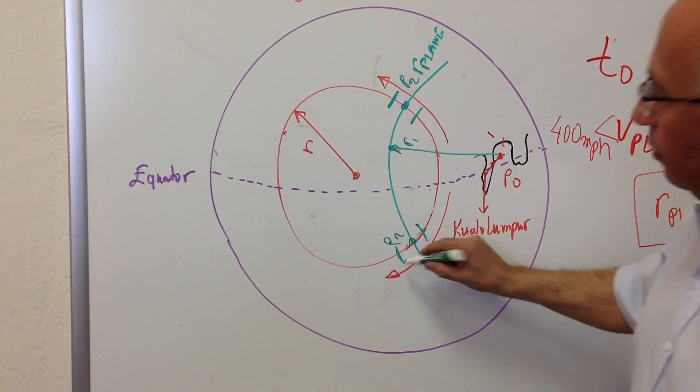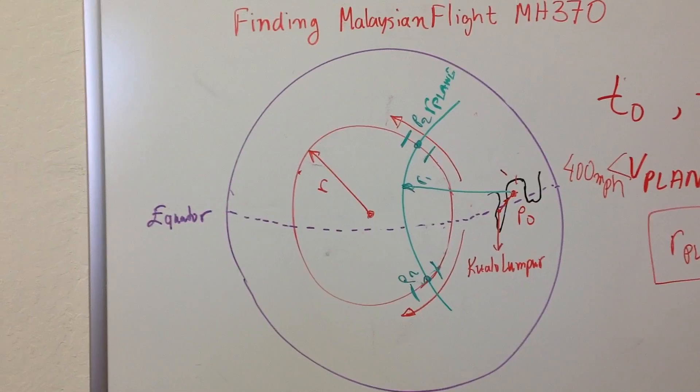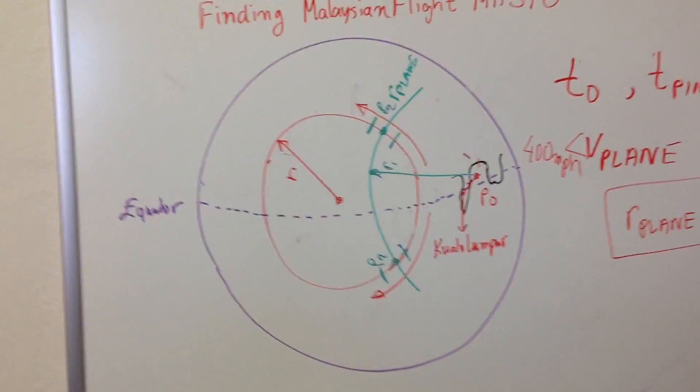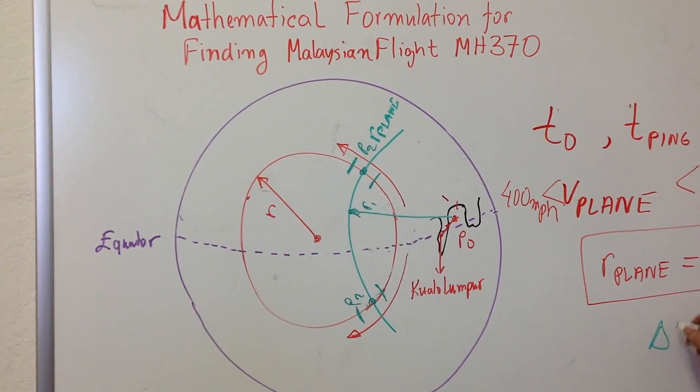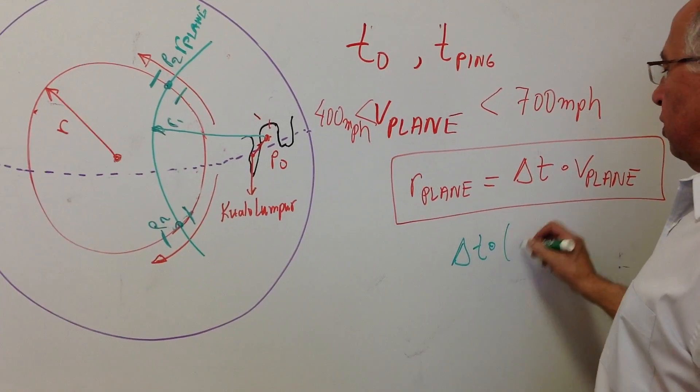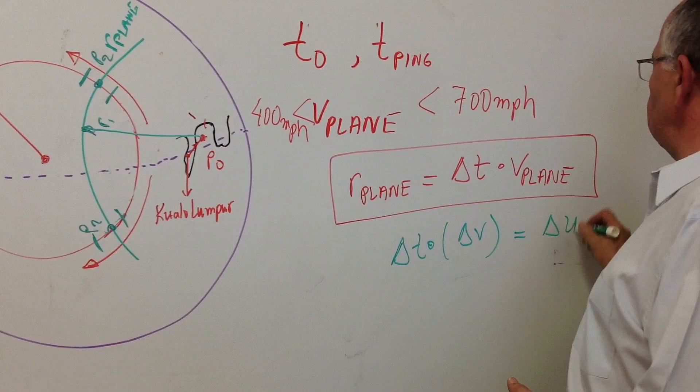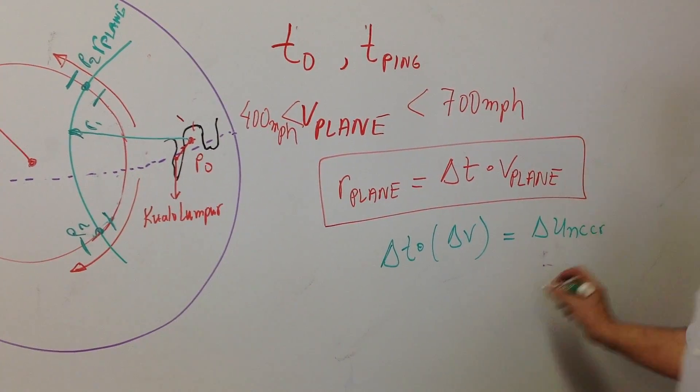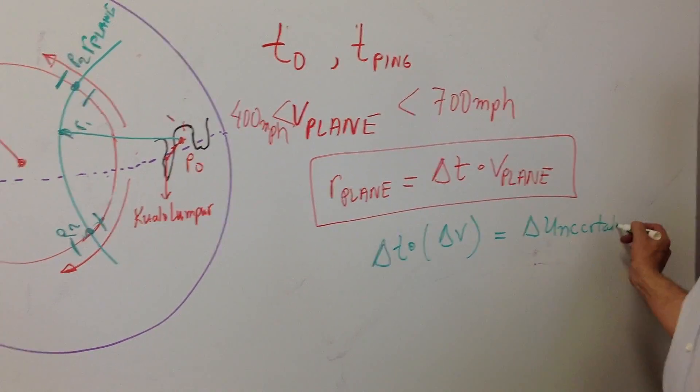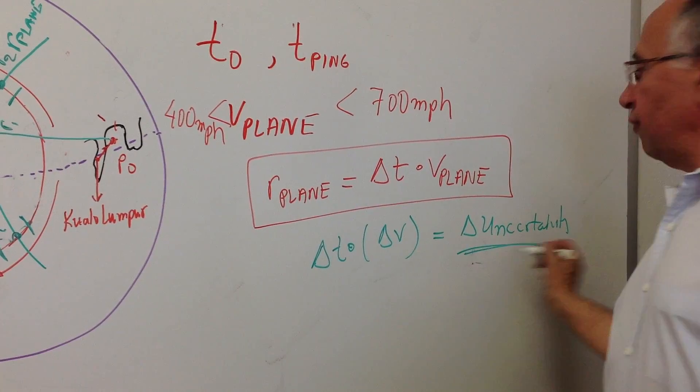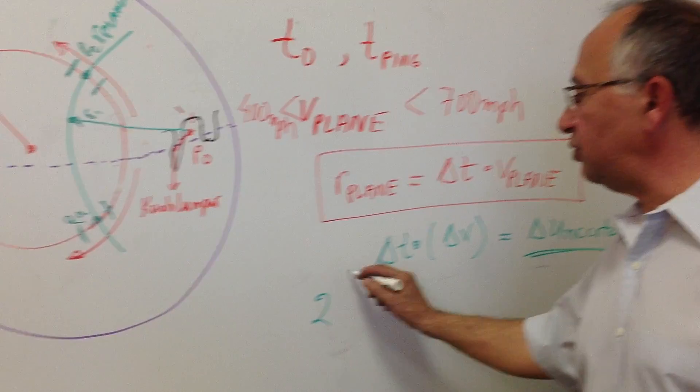We can calculate with fairly good certainty where this window is, so we don't have to look that far. This is the only thing we have to do: delta T times delta V will give you the delta uncertainty, which is really not that much. For example, if delta T is two hours